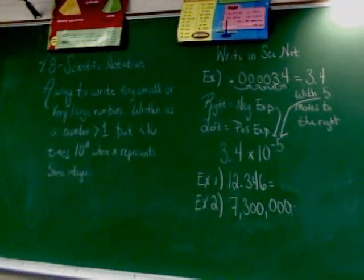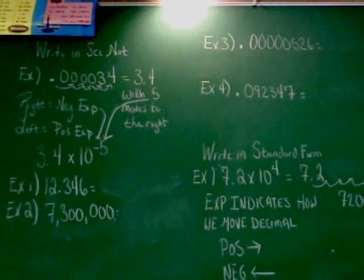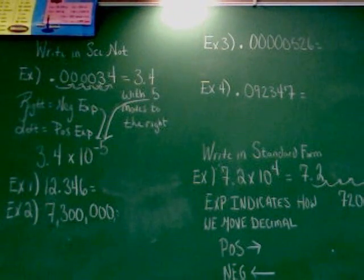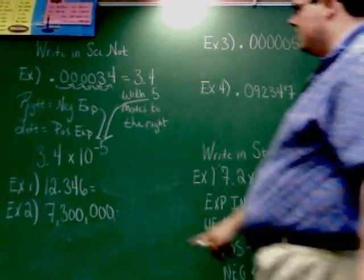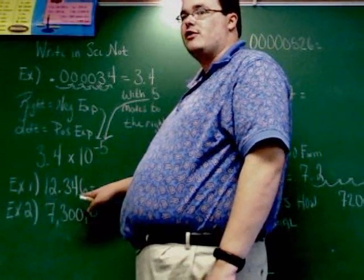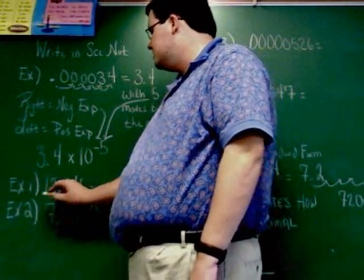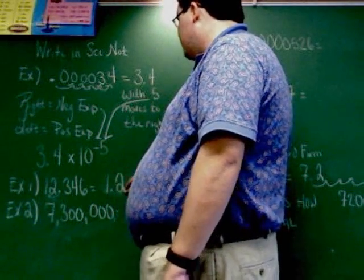So again, step one, you want to move the decimal so it's after the first number that's not a zero. So for instance, in this problem, 12.346, to put it after the first number that's not a zero, that means I'm going to have to place it right after the one. So 1.2346.